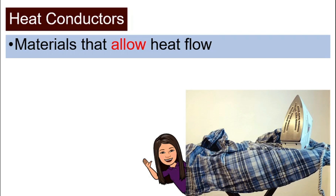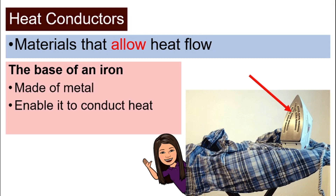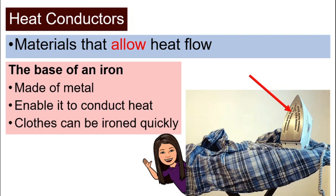Let's look at some examples. The first example shown in this picture here is the base of an iron. The base of an iron is made of metal and it enables it to conduct heat — meaning the ability to make heat flow, allowing the heat to flow — so the clothes can be ironed quickly.